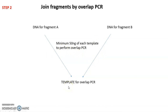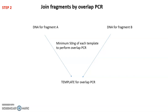Now you have everything — the template and the other reagents — to perform the overlap PCR. Consider fragment A and fragment B as your template. Before performing the overlap PCR, mix these two fragments together. Very important: each fragment must be at a minimum concentration of 50 nanograms. If the concentration is too low it might prevent the two parts from joining.